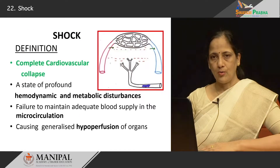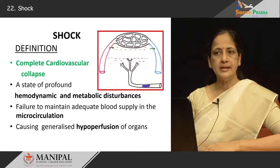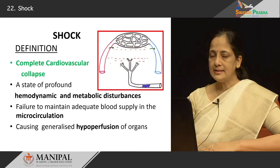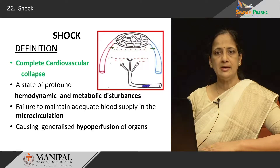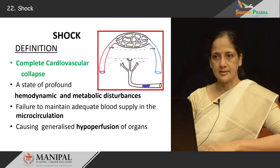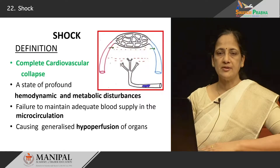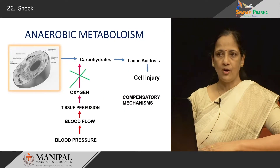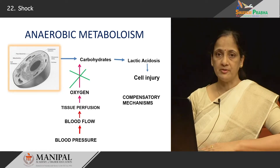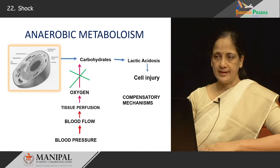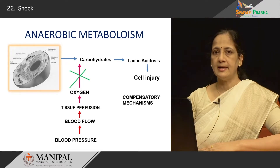Now, in shock, what happens is that there is complete cardiovascular collapse, meaning blood supply to each and every organ and tissue is affected. Therefore, there will be a state of profound hemodynamic and metabolic disturbances characterized by failure to maintain adequate blood supply to the microcirculation. This causes generalized hypoperfusion of the organs. If blood flow ensuring tissue perfusion is not there, lactic acidosis results and cell injury occurs.